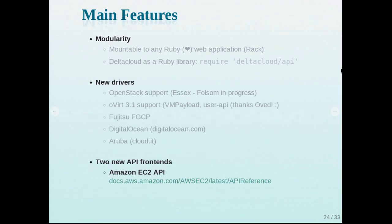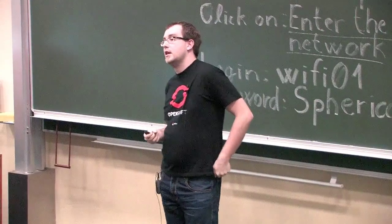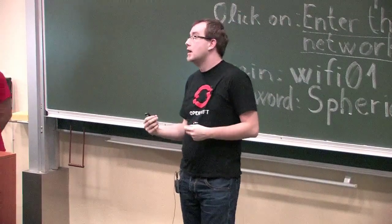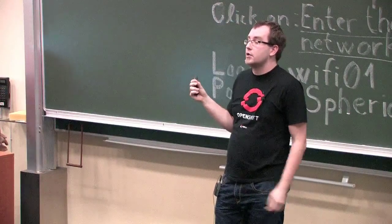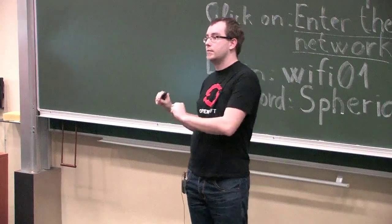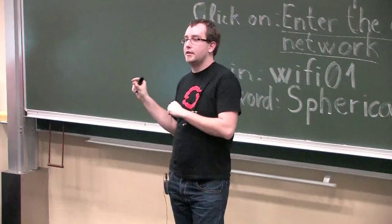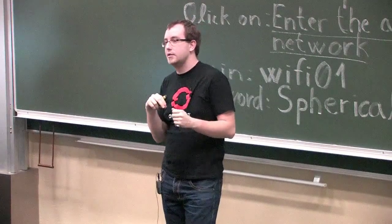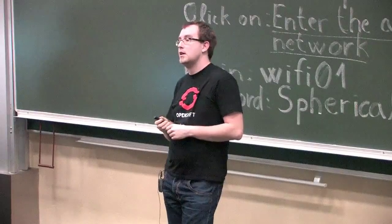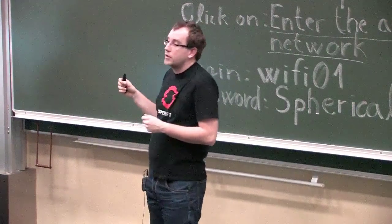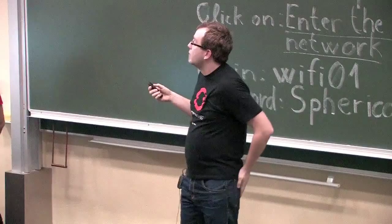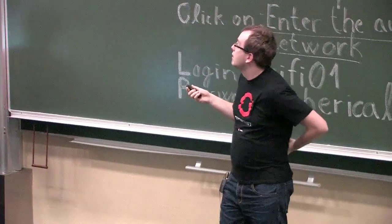Most importantly, we added new API frontends. Before we had just the Delta Cloud API with our media type in XML and JSON. Now we've added support for the EC2 API frontend — you can start Delta Cloud, advertise the EC2 API, and if you already have a client that speaks EC2, you can use it to talk to RHEV, OpenStack, or any other supported provider. You can also launch Delta Cloud with multiple APIs simultaneously. More importantly, we added the new DMTF CIMI API frontend.